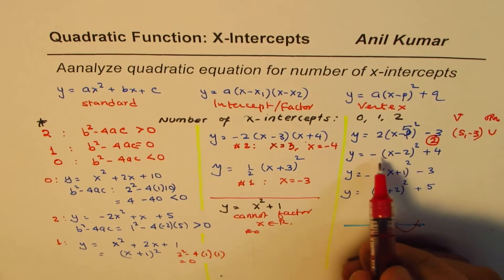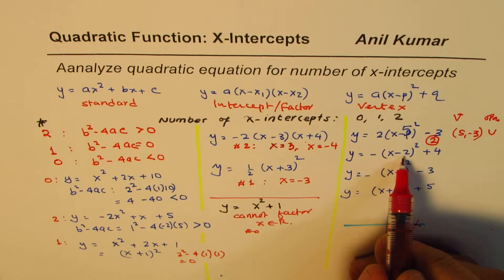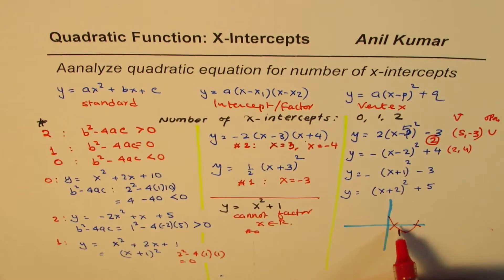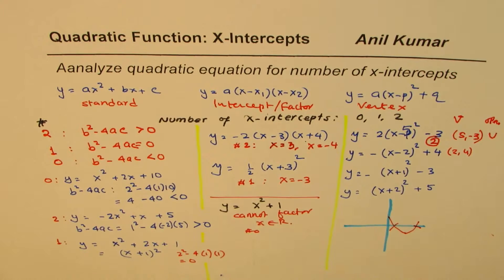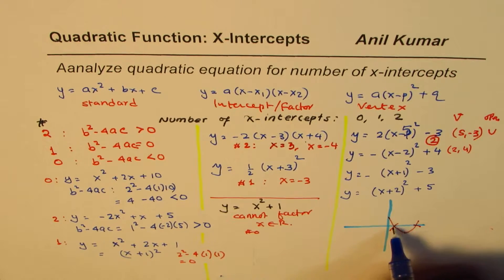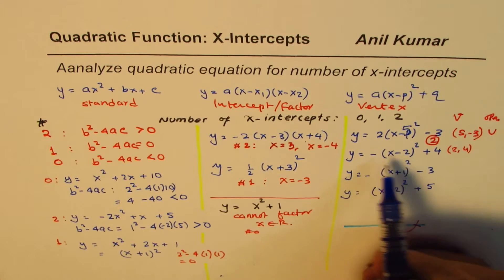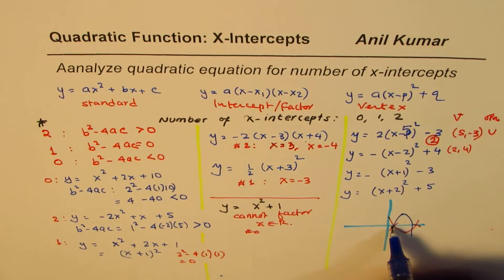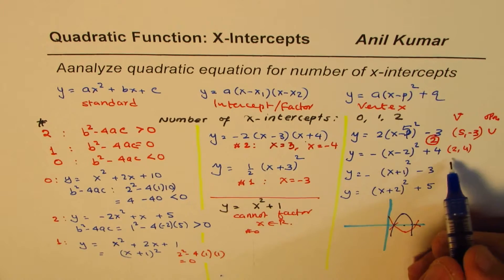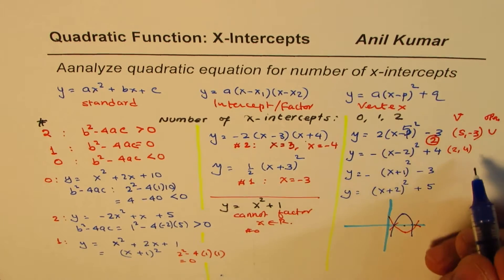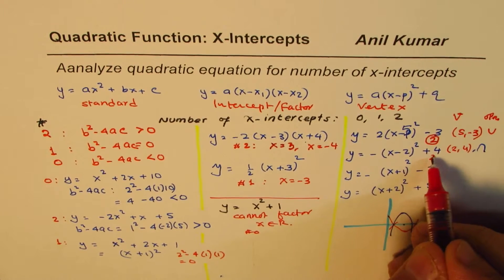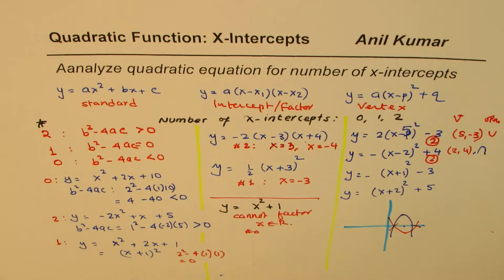For y = -(x - 2)² + 4, the vertex is at (2, 4), which is above the x-axis, and the negative leading coefficient means it opens downwards — so it crosses at two points, giving 2 x-intercepts again.